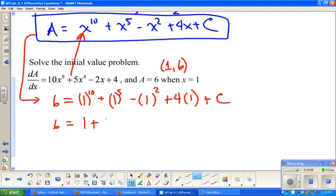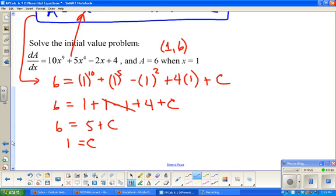So now I need to solve for C. So 6 equals 1 plus 1 minus 1 plus 4. A little more combining of like terms. 5 plus C. And so let's go one more step.